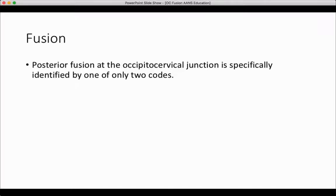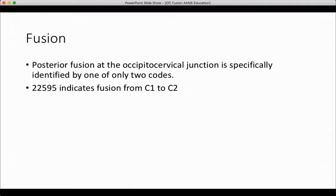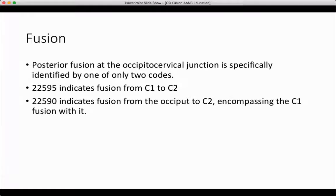Posterior fusion at the occipitocervical junction is specifically identified by one of only two CPT codes. 22595 indicates fusion from C1 to C2 alone. 22590 encompasses any fusion extending from the occiput to C2, encompassing the C1 fusion with it.